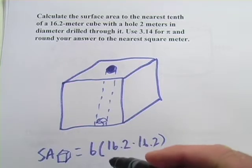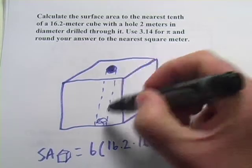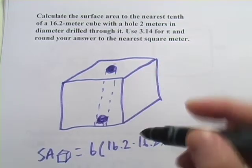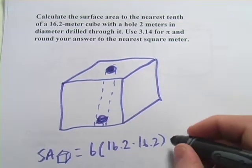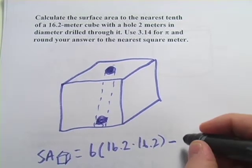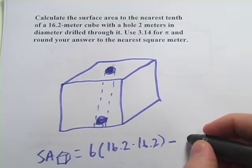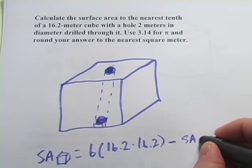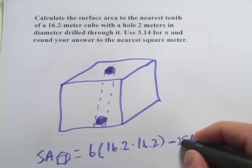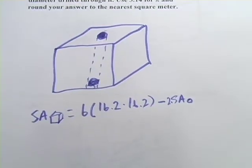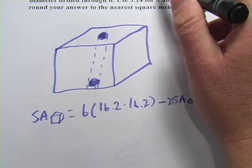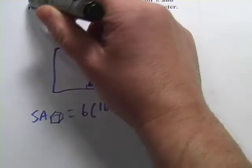We're going to have to do a little bit more work, though. When they drilled the hole, they took out that circle. So here and here, those little circles are missing. So we need to subtract the surface area of the circle. Actually, two of them. So two times the surface area of the circle. So what's that going to be? Well, our radius here, they tell us the diameter is 2, so the radius is 1.